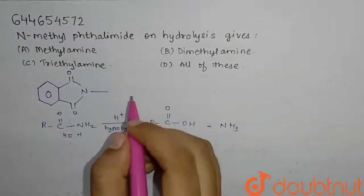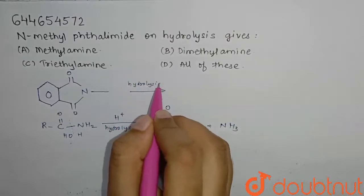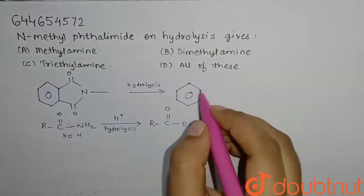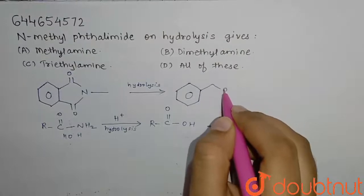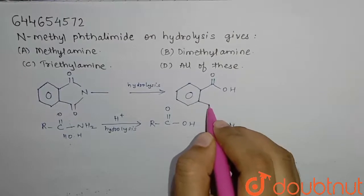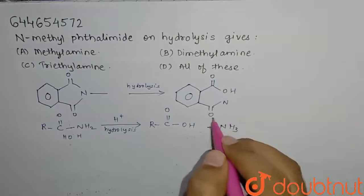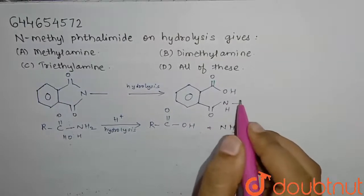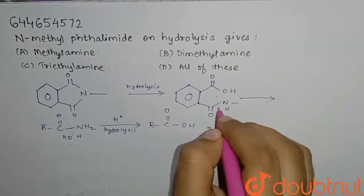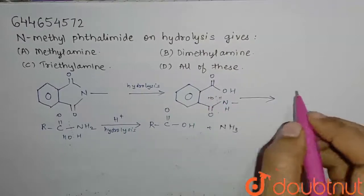Similarly, here we will do hydrolysis. So what will happen? We will get OH, C double bond O here. Here we have C double bond O, and here we have nitrogen which has a hydrogen and one methyl group. So when we add water here, the OH group is attached here and hydrogen is attached here.